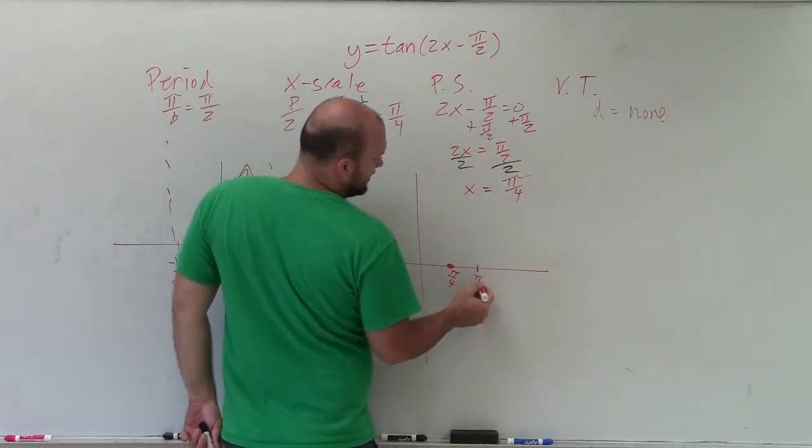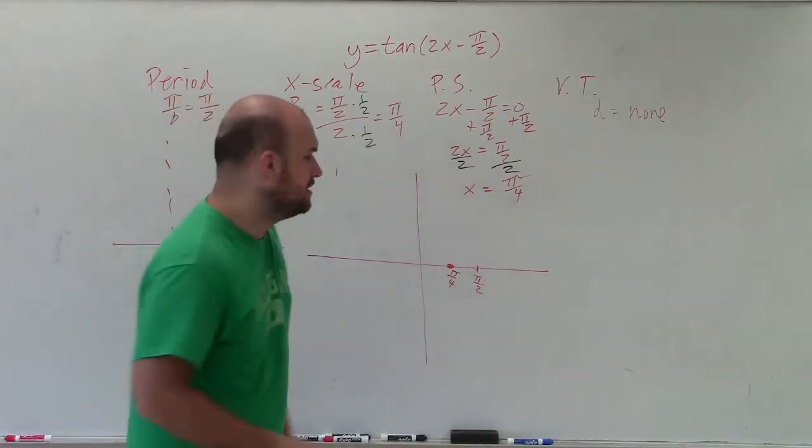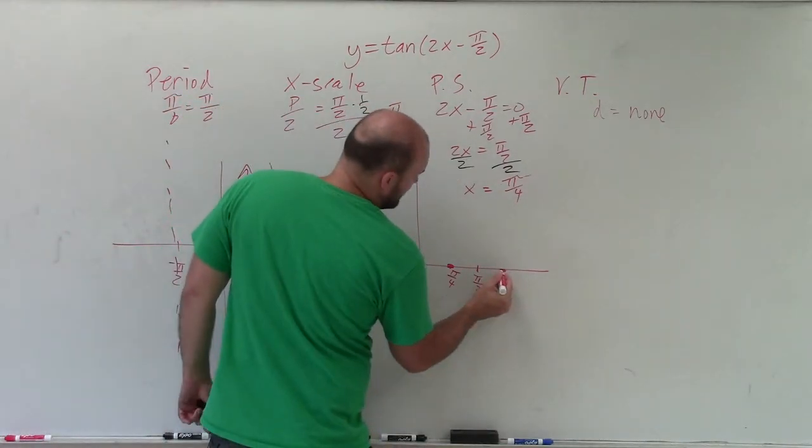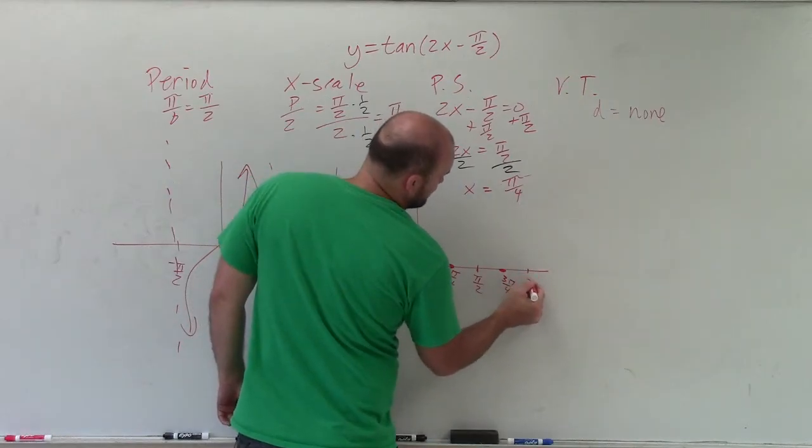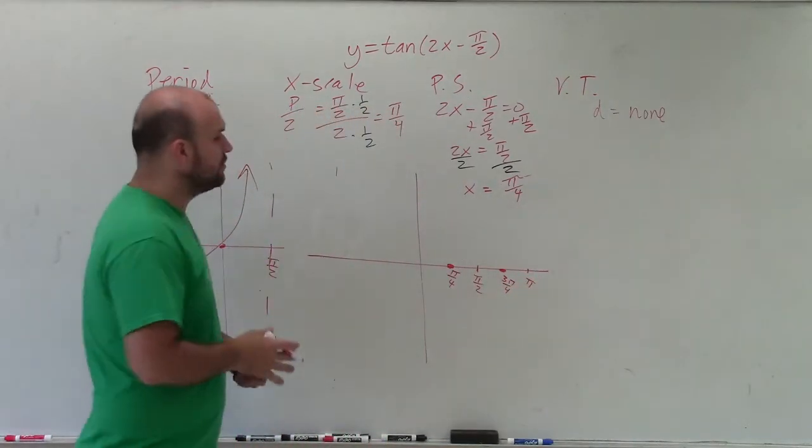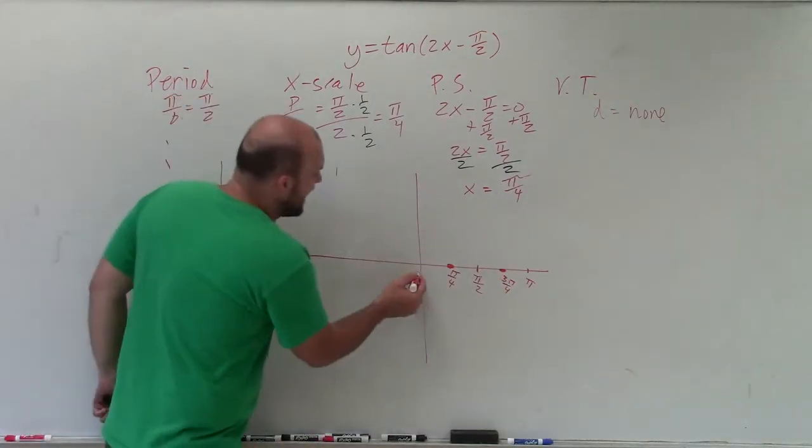So that really is pi halves. 2 pi over 4. And then the next one would be 3 pi over 4. And the next one would be pi. So notice the distance between each of my x scales is pi over 4.